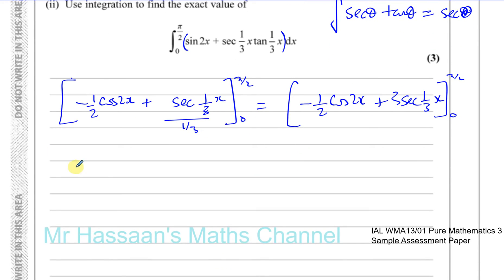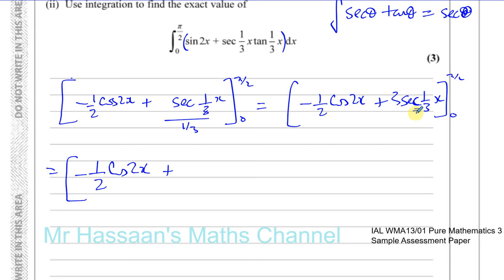To make things clearer before substituting, I'll rewrite sec(x/3) as 1 over cos(x/3) — the third letter of 'secant' is 'c', which tells you it's the reciprocal of cosine. So the expression is minus half cos(2x) plus 3 over cos(x/3), evaluated between the limits 0 and π/2.